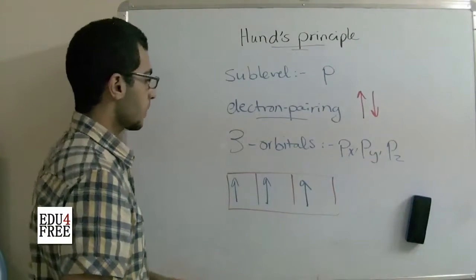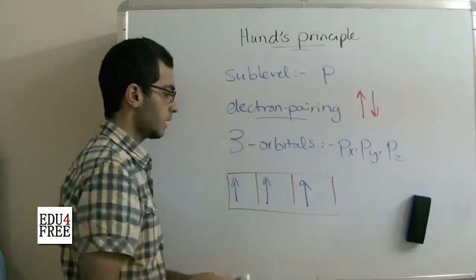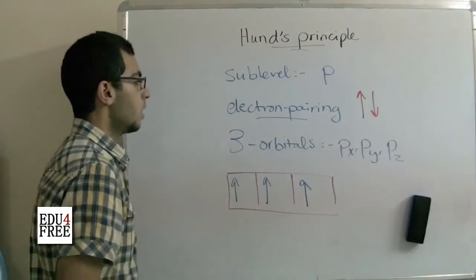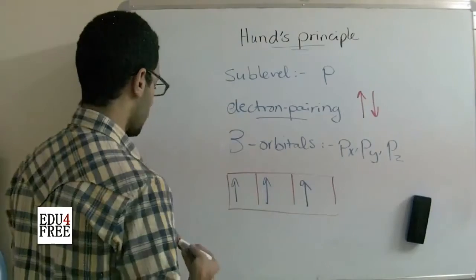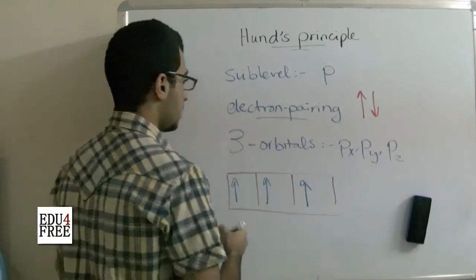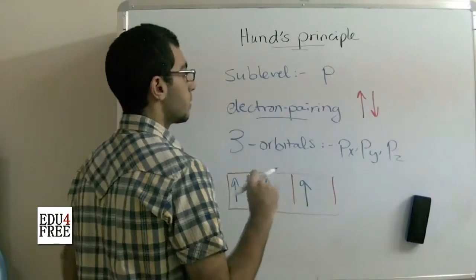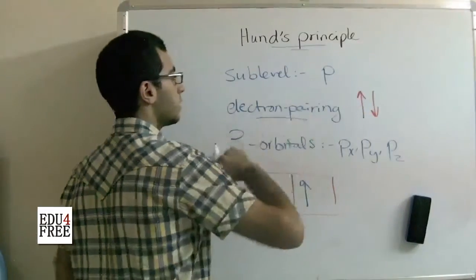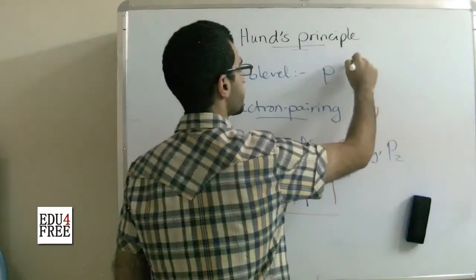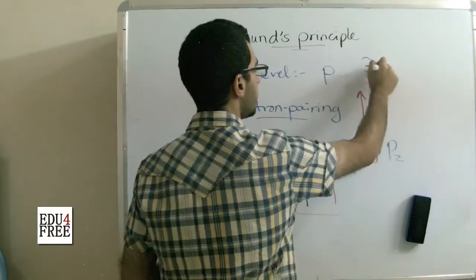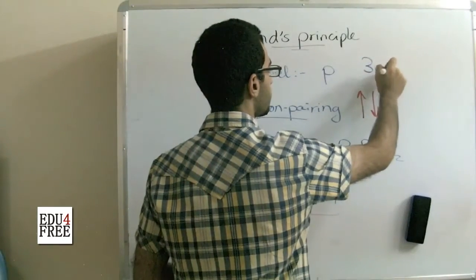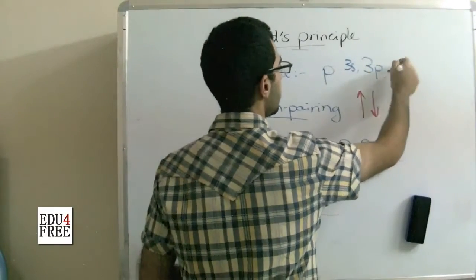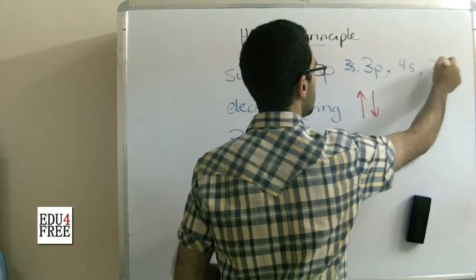So if we have a fourth electron here, what would happen? We know that the order of the orbitals is 3s, then 3p, then 4s, then 3d.